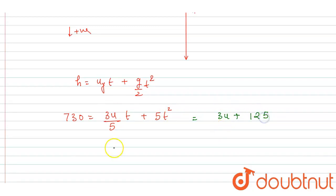From here I will get 3u equals 730 minus 125, so it will be 605.